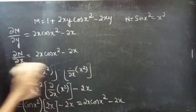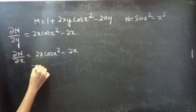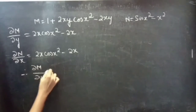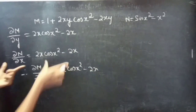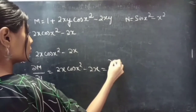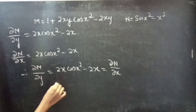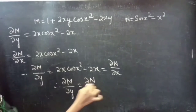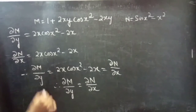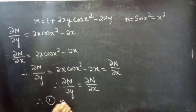Therefore ∂M/∂y = 2x cos(x²) - 2x, which equals ∂N/∂x. Since the partial derivative of M with respect to y equals the partial derivative of N with respect to x, we can say that the given differential equation, equation 1, is an exact equation.